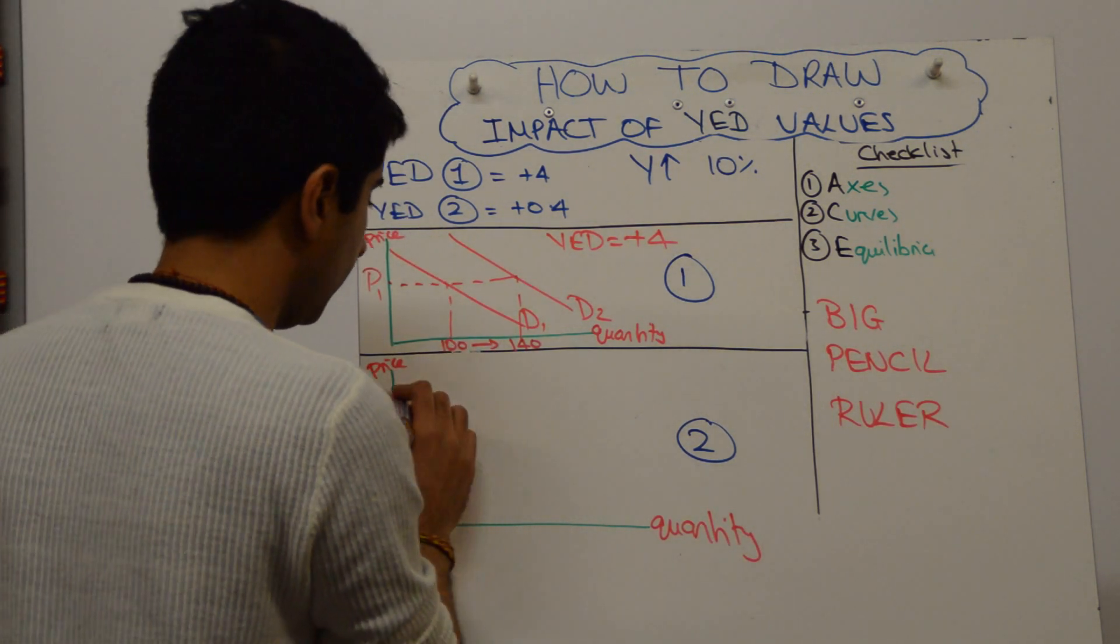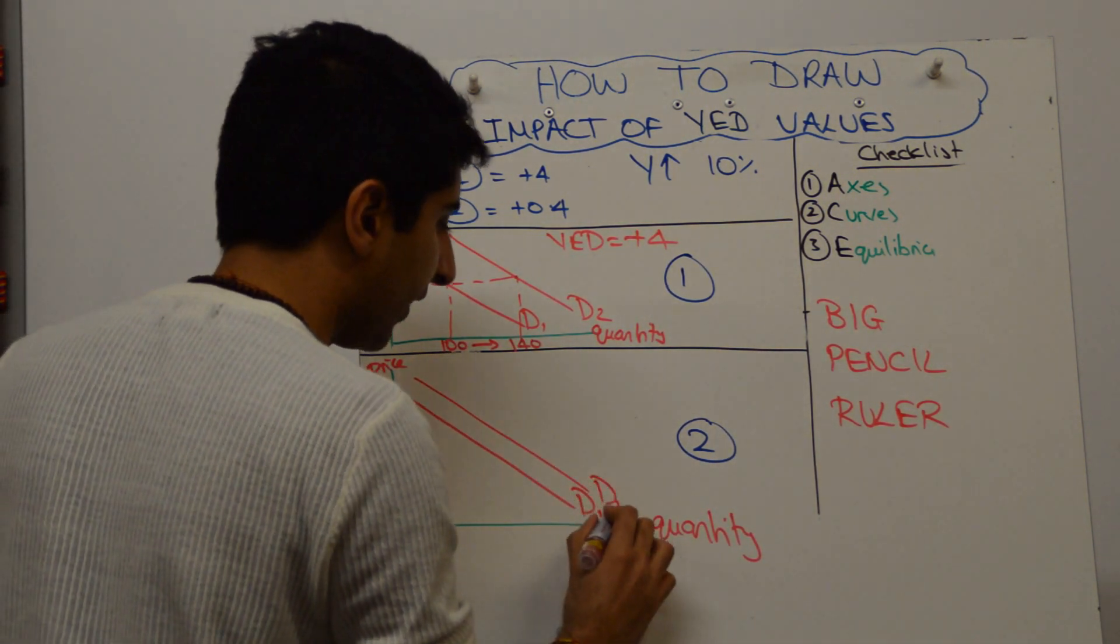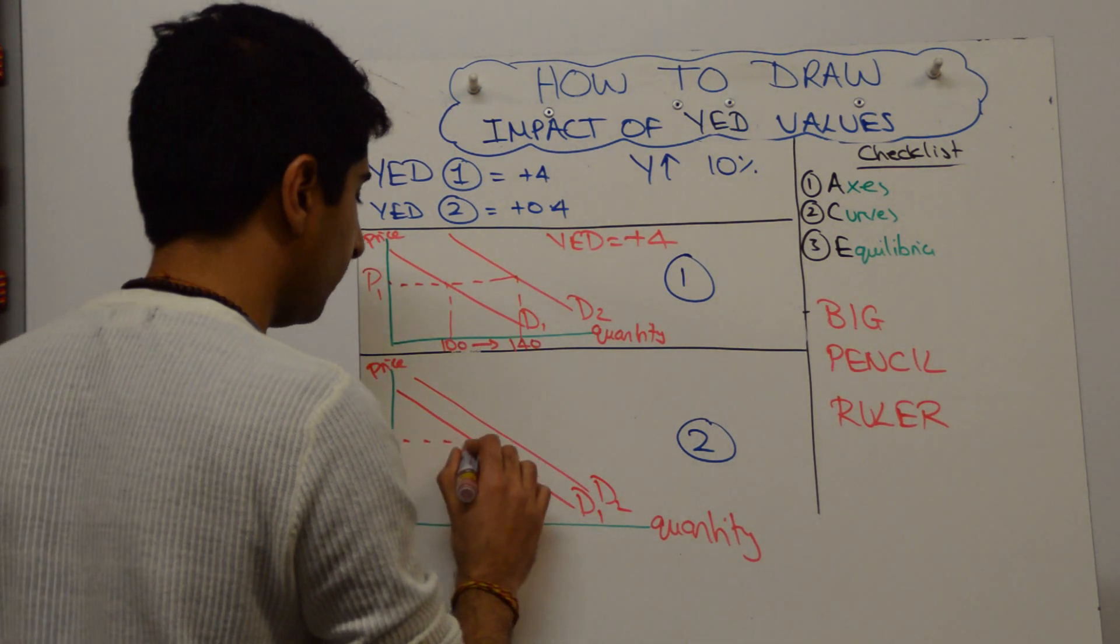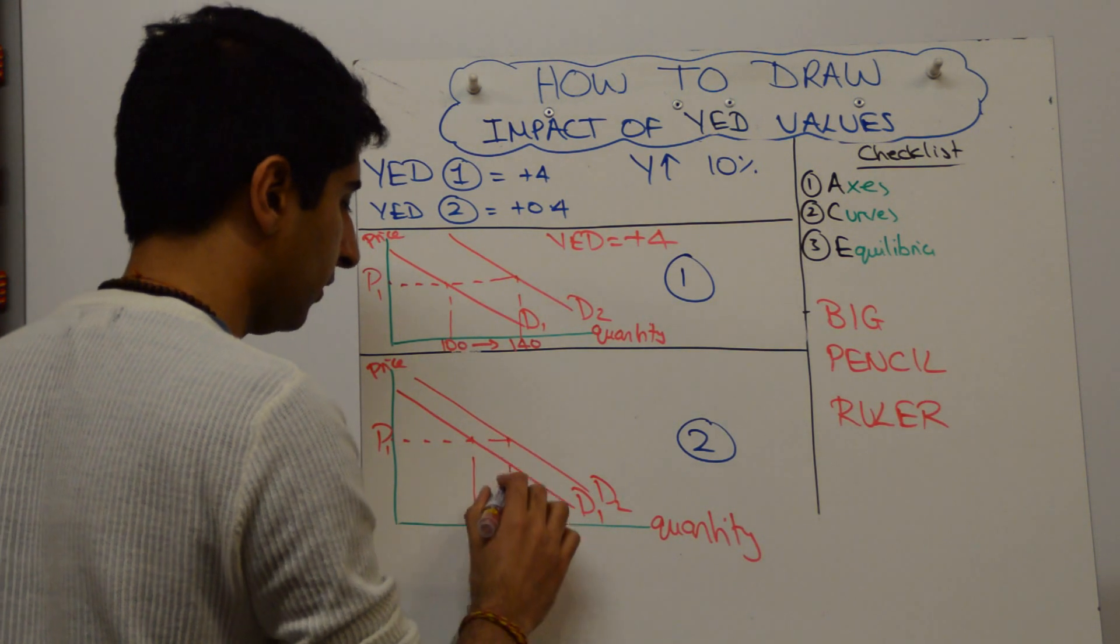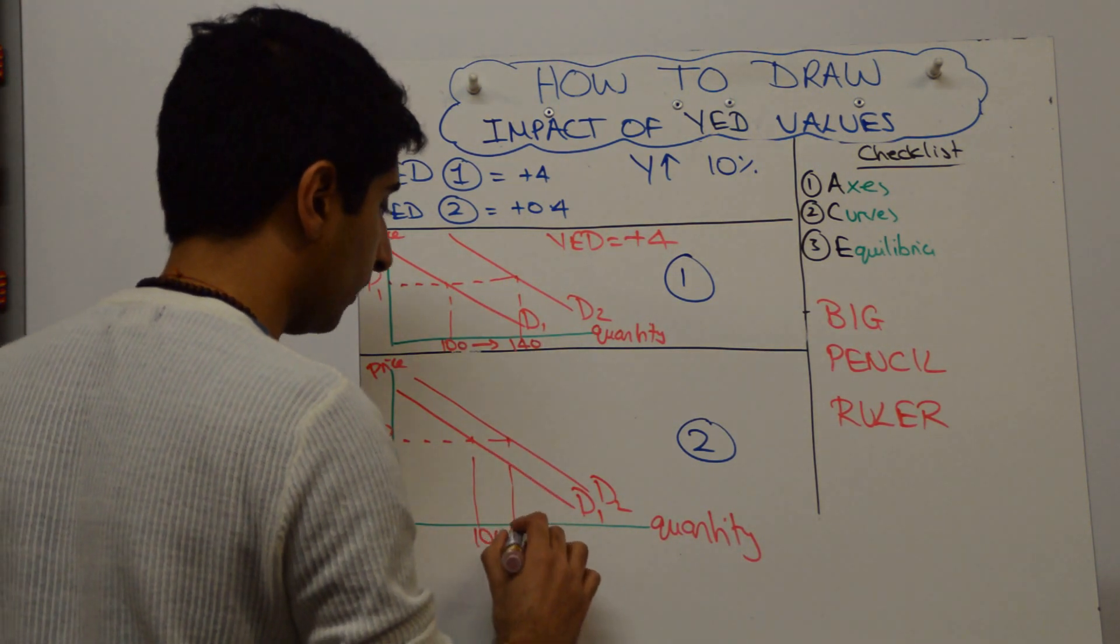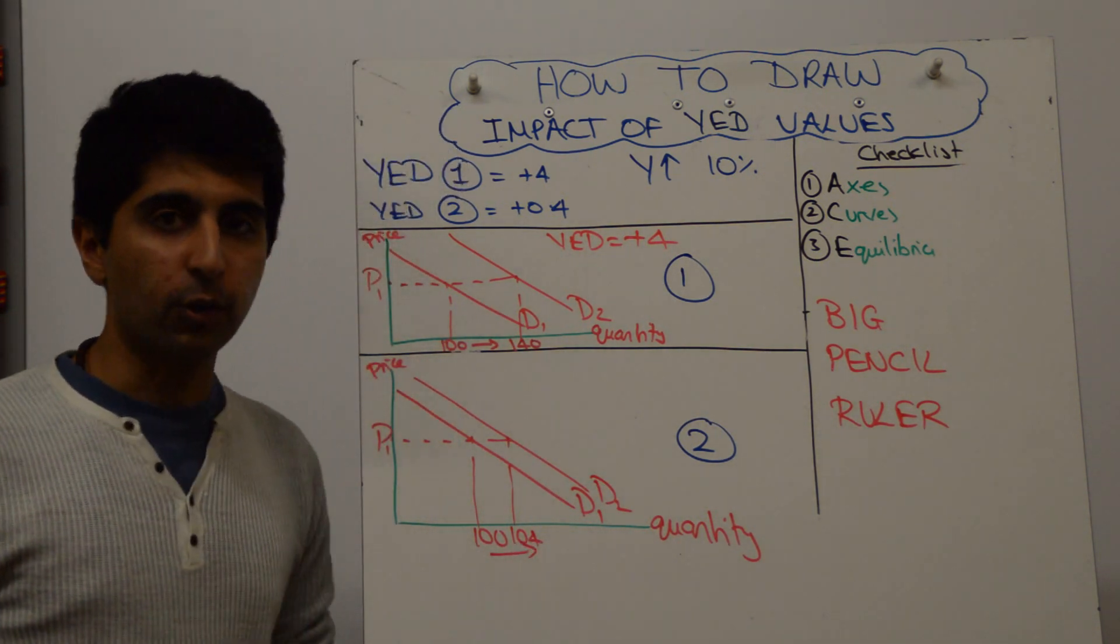And that's the key thing. Alright, so there's D1. Now the shift is going to be much smaller, and that's what you make clear. So the price hasn't changed. The price remains at P1. And if initial demand was 100, new demand is now 104. Only a 4% increase in quantity demanded.